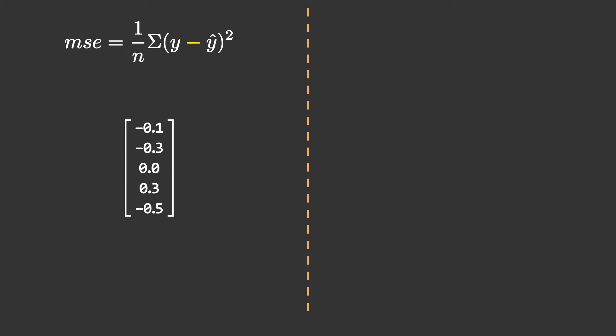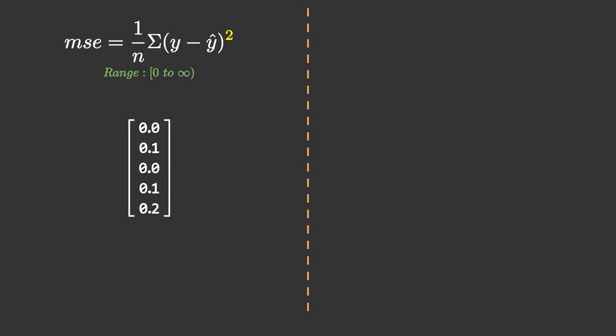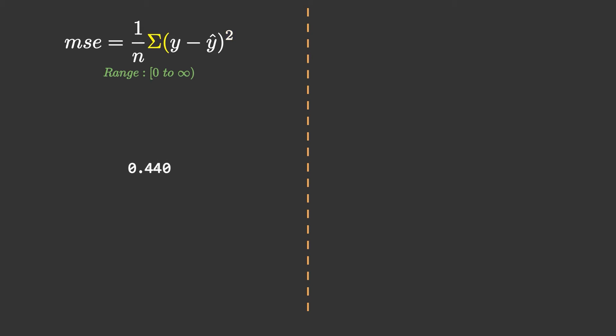We square the result because we don't want any negative values in the output. If our matrix contains negative values, squaring turns all negatives to positives, meaning mean squared error values can range from 0 to infinity. Then we sum up this array and divide by n, which is the number of samples. In this array the total number of rows is 5, so n equals 5. If your array contains 100 rows then n will be 100. So dividing 0.44 by 5 gives 0.088 — a fairly good error rate.